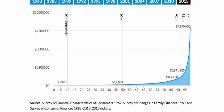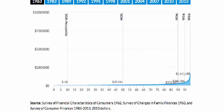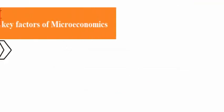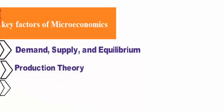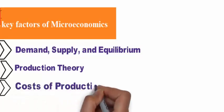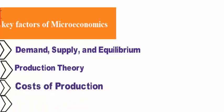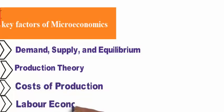Microeconomics does not decide what changes are taking place in the market; instead, it explains why there are changes happening in the market. The key factors of microeconomics are demand, supply, and equilibrium, production theory, costs of production, labor economics. For example: individual demand, price of a product.